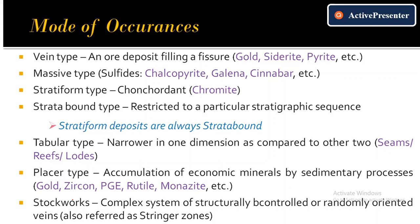Different modes of occurrence can be of vein type or massive type. A vein is intrusive — it can be filling a fissure, fracture, or any weak plane. An ore deposit which is filling a pre-existing fissure or fracture of a host rock, where mineral concentration is present, is your vein type deposit.